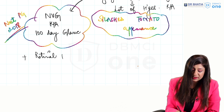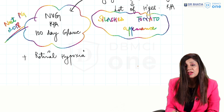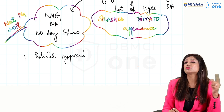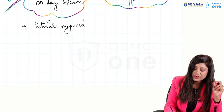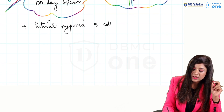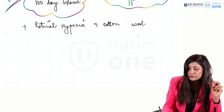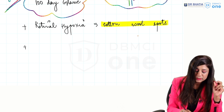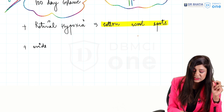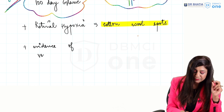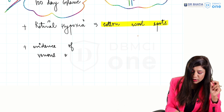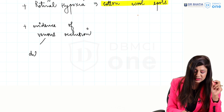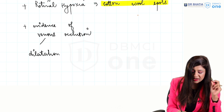You can also get 100-day glaucoma. Along with this, due to retinal hypoxia caused by ischemia and VEGF release leading to neovascular glaucoma, you will also see cotton wool spots on fundus examination. Additionally, there will be evidence of venous occlusion - venous dilatation as well as tortuosity.